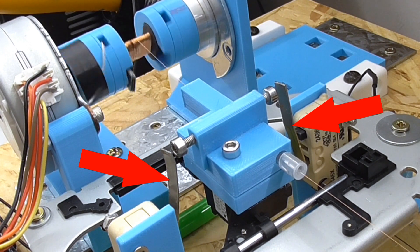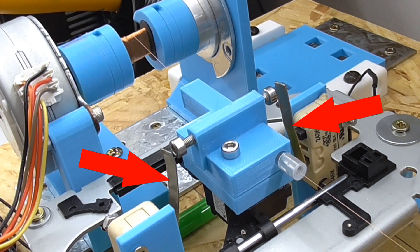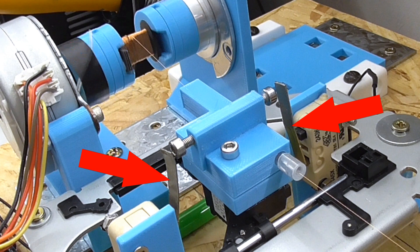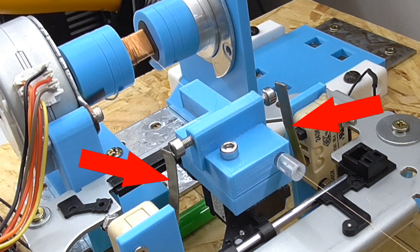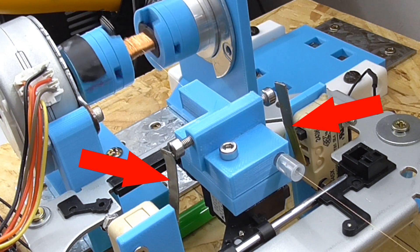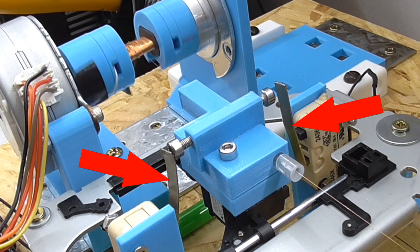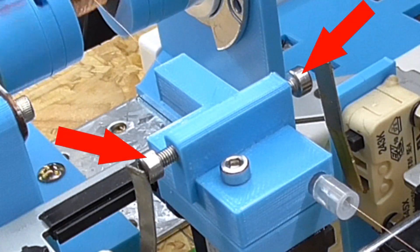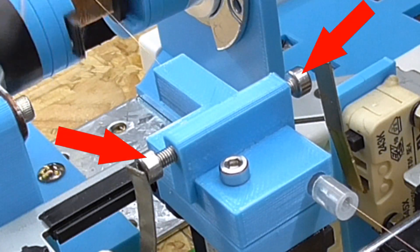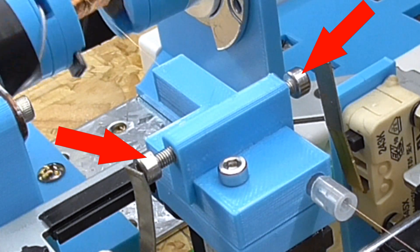The reversal at the two ends is triggered by these micro switches, also salvaged from old equipment. The two screws here will allow me to fine tune when to reverse the direction, but it seems to be fine the way I have it set now.